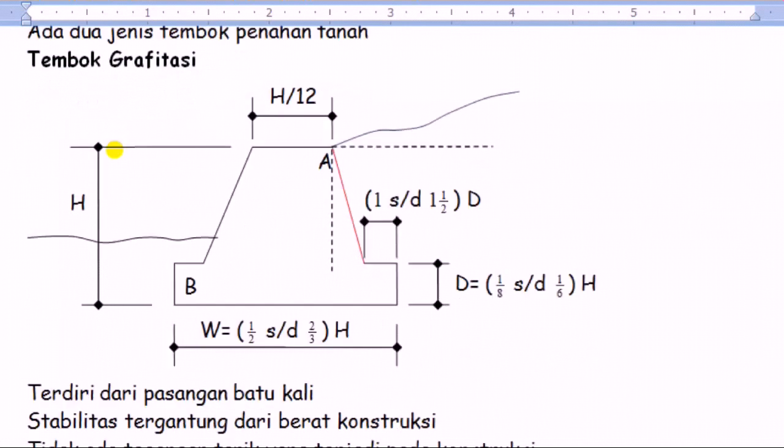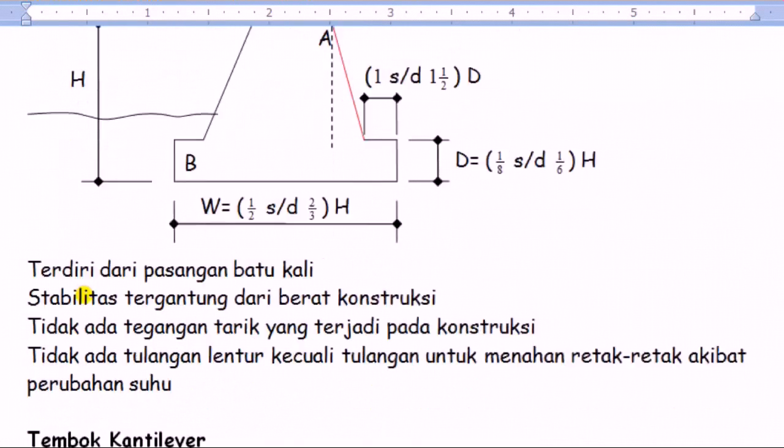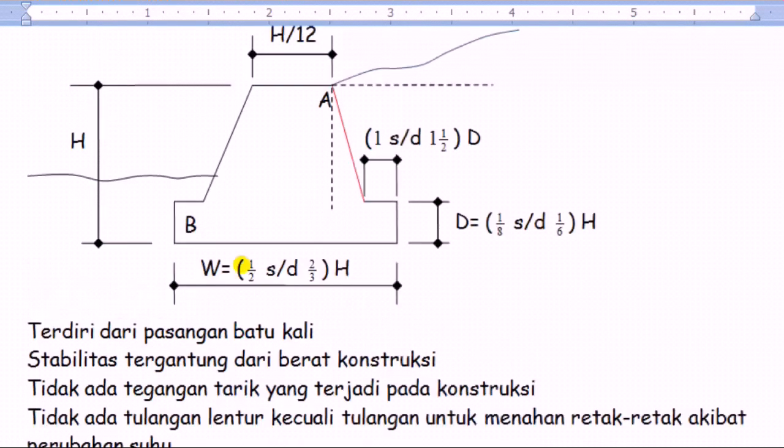Tembok gravitasi itu biasanya terdiri dari pasangan batu kali. Jadi tembok ini biasanya terdiri dari pasangan batu kali.